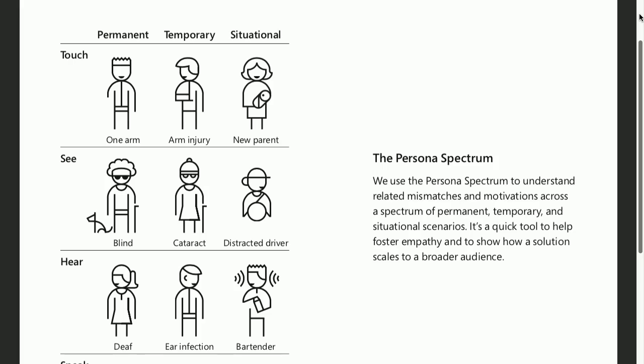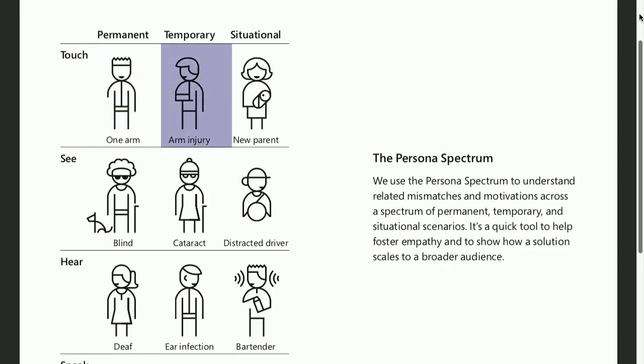Some of your audience might have a permanent disability, such as having only one arm. However, Microsoft notes there are also temporary disabilities, such as a broken arm that will eventually heal, and situational disabilities, like using a smartphone one-handed while holding a baby. These temporary and situational disabilities can impact your entire audience, not just those with permanent conditions impacting their ability to see, hear, move, think, or communicate.